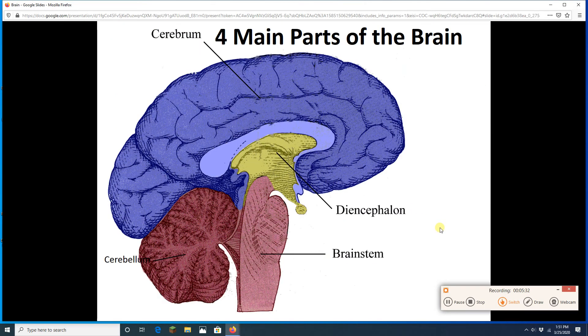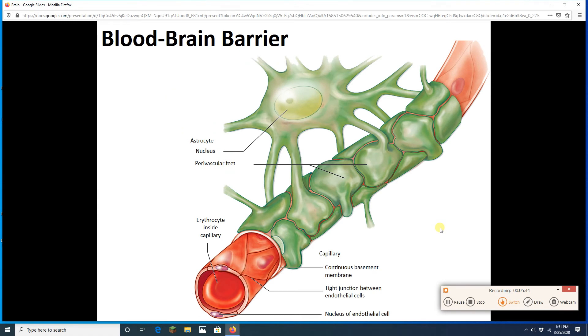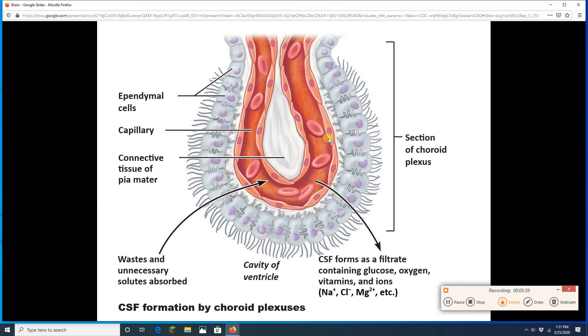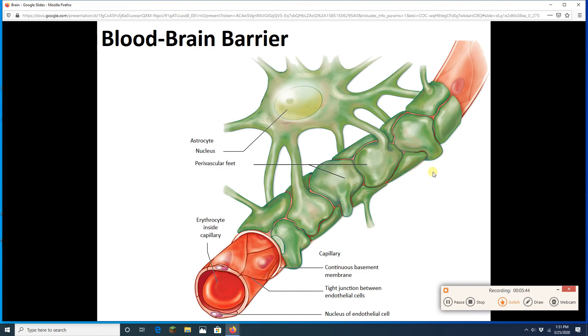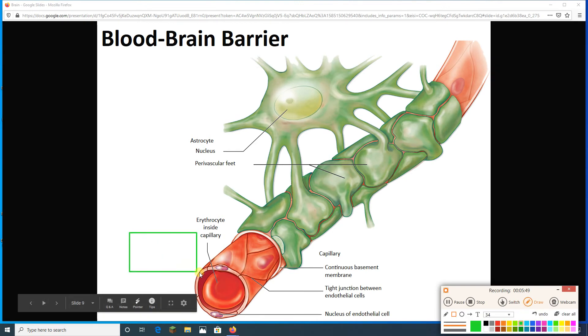Now, the capillary I just showed you a moment ago was a choroid plexus capillary. It is unique in the amount of exchange it allows. Most brain blood capillaries, like this guy right here, most brain capillaries are going to have tight junctions between their lining. Tight junctions between their endothelial cells.